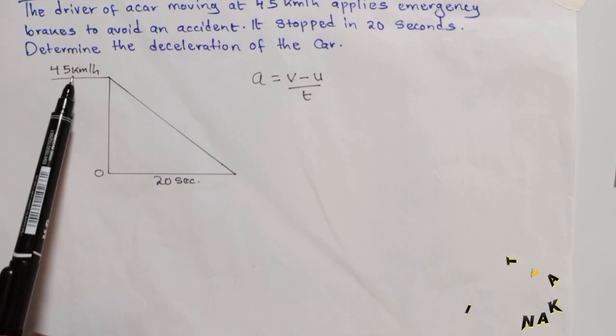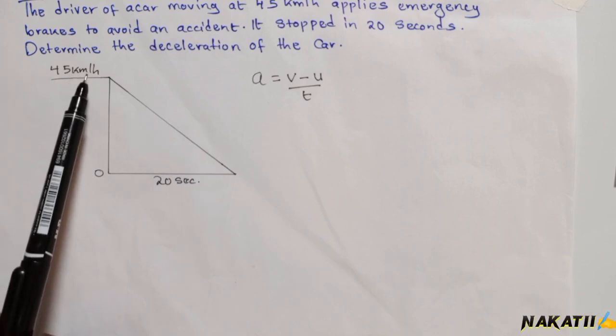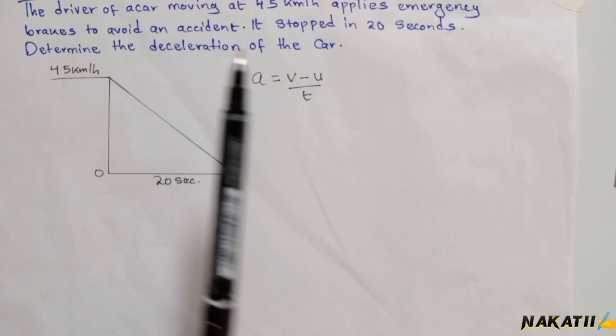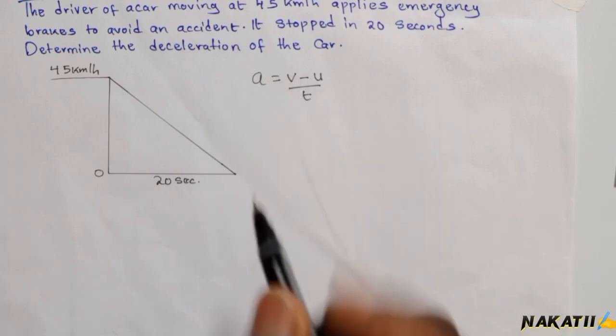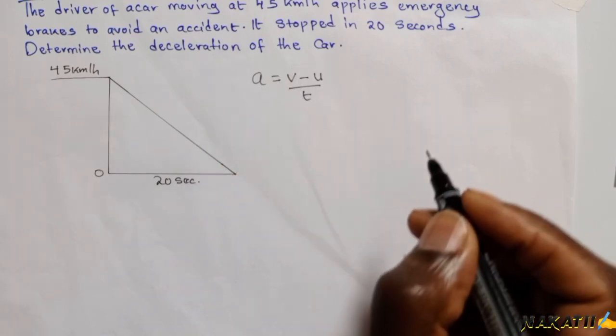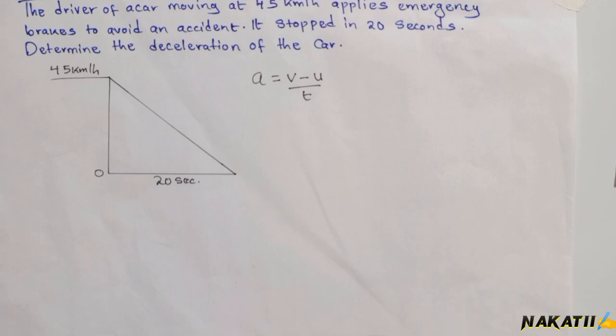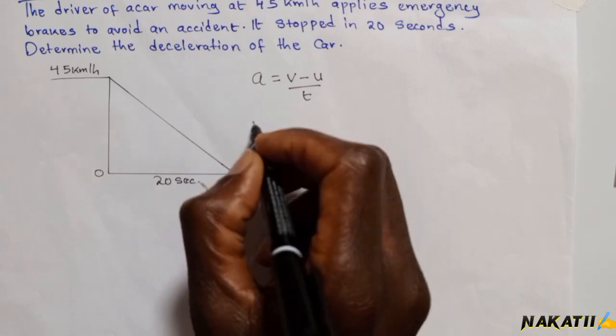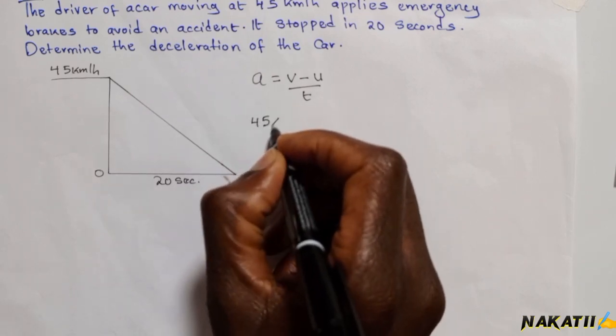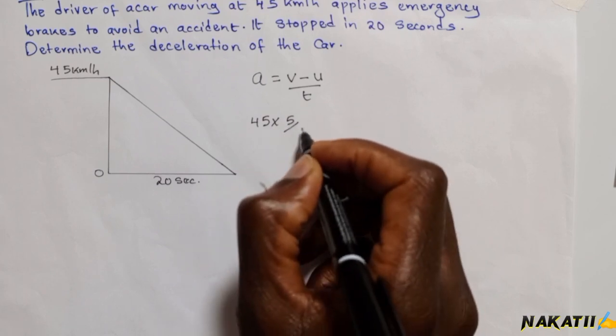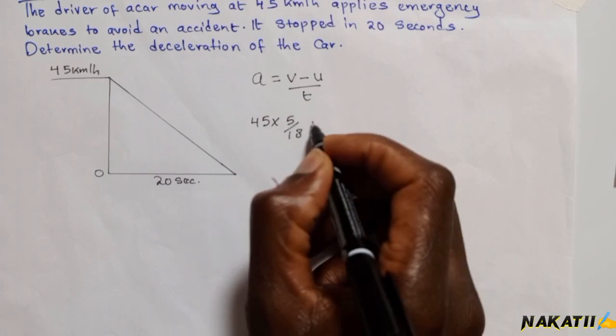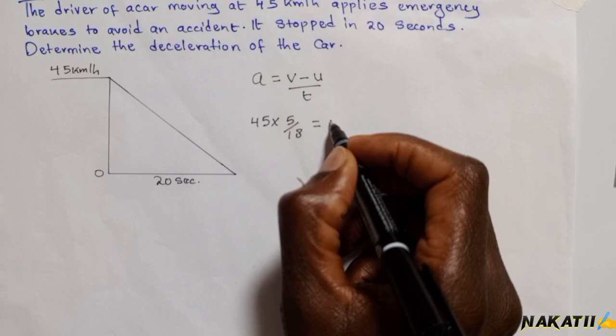This velocity is given in kilometers per hour, but we need it in meters per second. To convert kilometers per hour to meters per second, you multiply by 5 over 18. We have 45 multiplied by 5 over 18, which equals 12.5 meters per second.